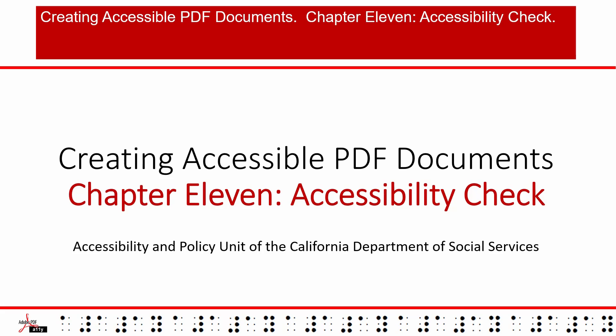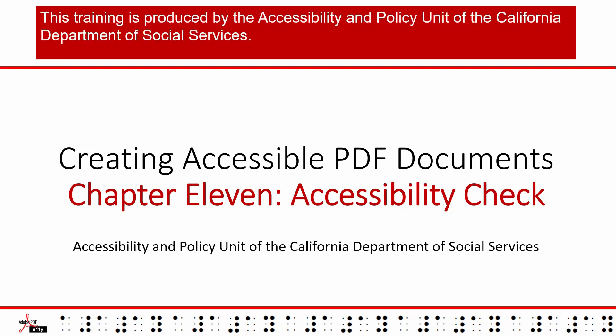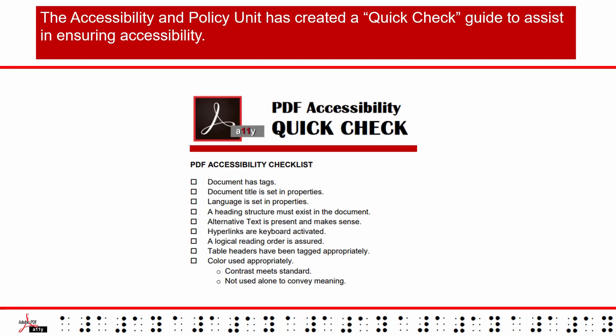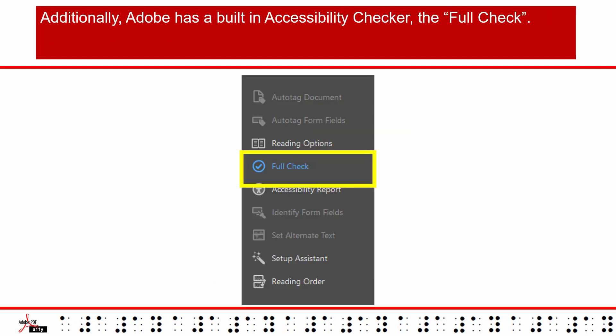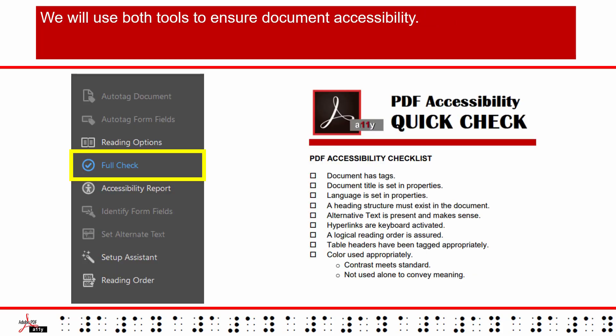Creating Accessible PDF Documents, Chapter 11: Accessibility Check. This training is produced by the Accessibility and Policy Unit of the California Department of Social Services. The Accessibility and Policy Unit has created a quick check guide to assist in ensuring accessibility. Additionally, Adobe has a built-in accessibility checker, the "Full Check." We will use both tools to ensure document accessibility.